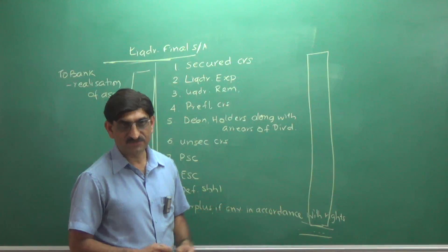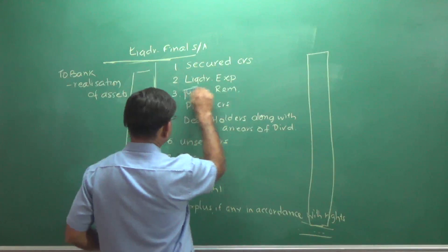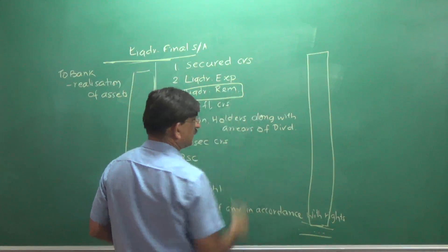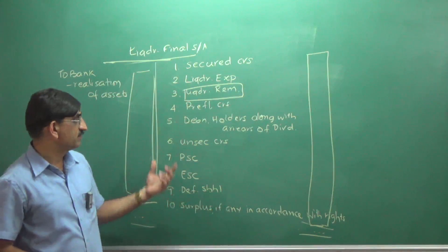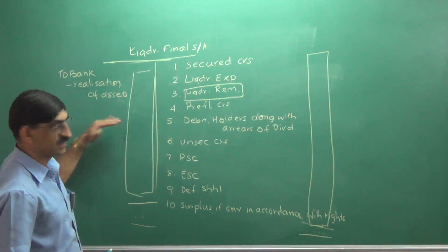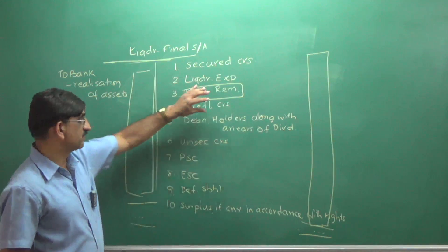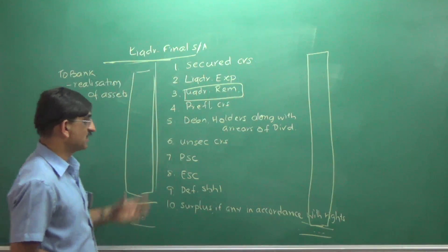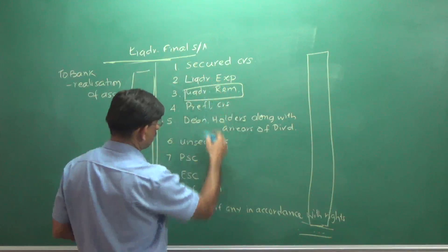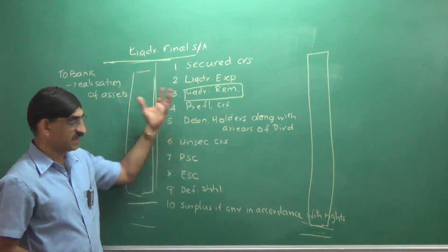With this, the chapter is going to close. The challenge over here is liquidators remuneration. He will be paid based on his efforts and his skill in collection from debtors. So more the collection, more will be his remuneration. It's a percentage on collection of debtors and it's a percentage on payment to various people. So it's a combination of collection and payment.